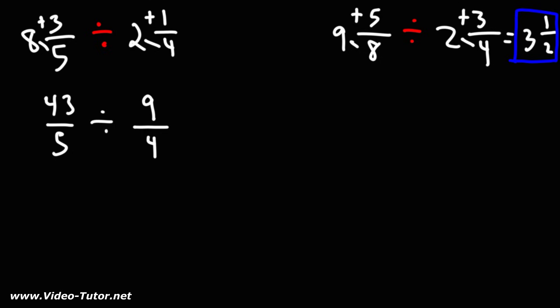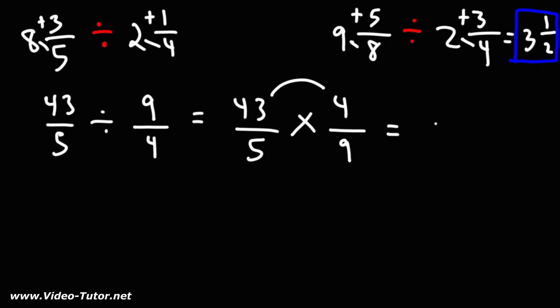Now, let's change the division problem to a multiplication problem using keep change flip. So let's keep the first fraction the same, change division to multiplication, and then let's flip the second fraction. 43 and 9 don't have any common factors, so there's nothing we could simplify or cancel. So we have to multiply across. 43 times 4: 40 times 4 is 160, and 3 times 4 is 12. 160 plus 12 is 172. 5 times 9 is 45.